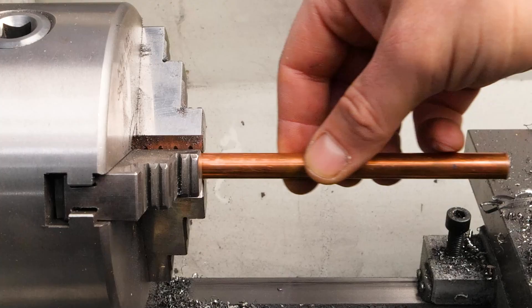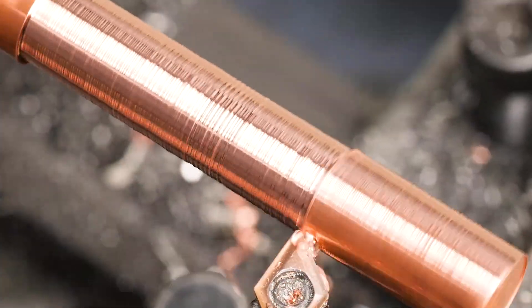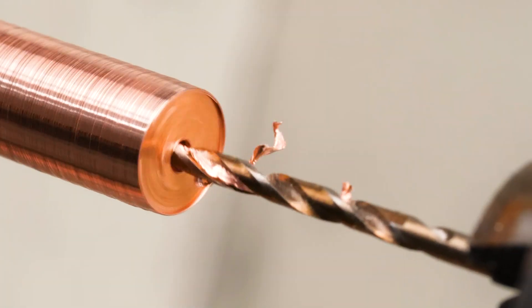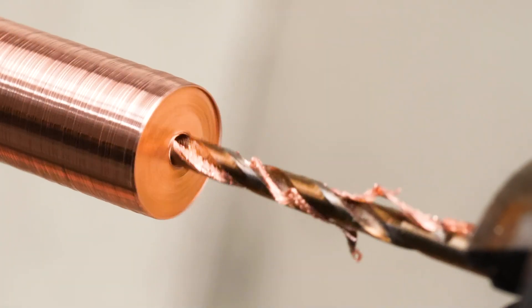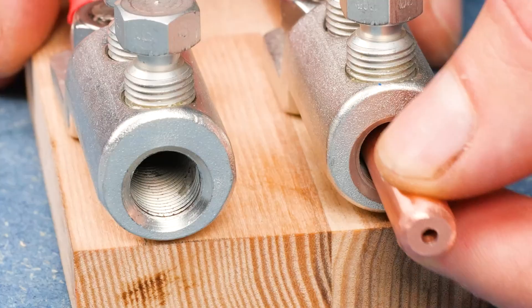Moving on, I take a copper rod and machine it to cut out two electrodes. Then, I remove the cable clamps. These electrodes get inserted into the cable clamps.